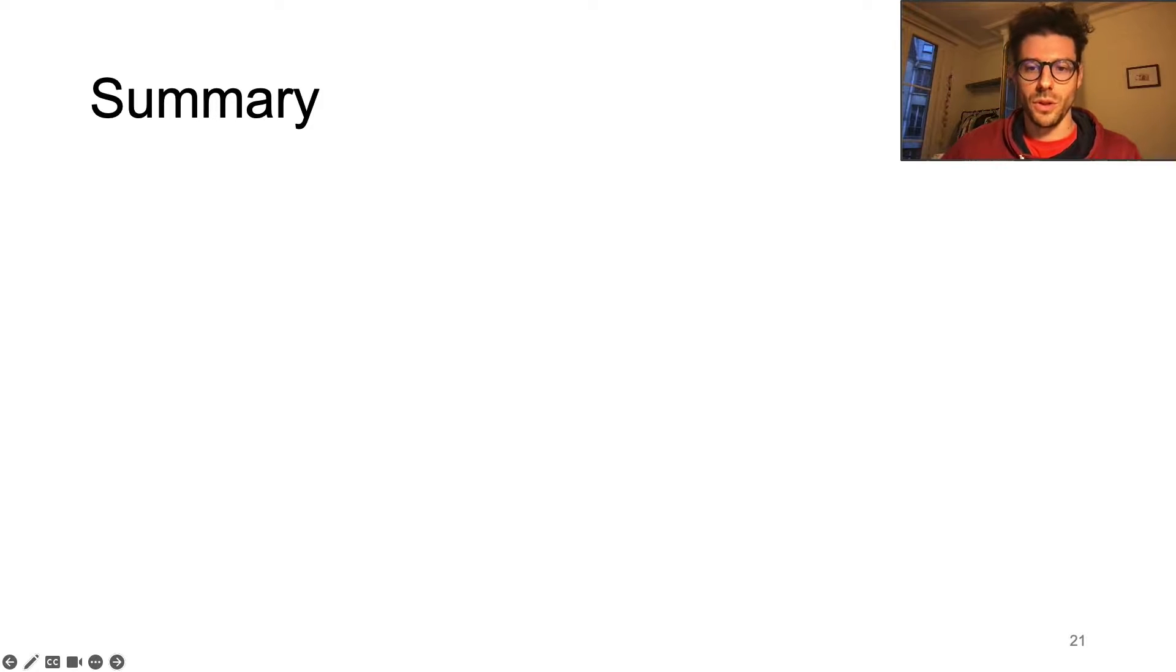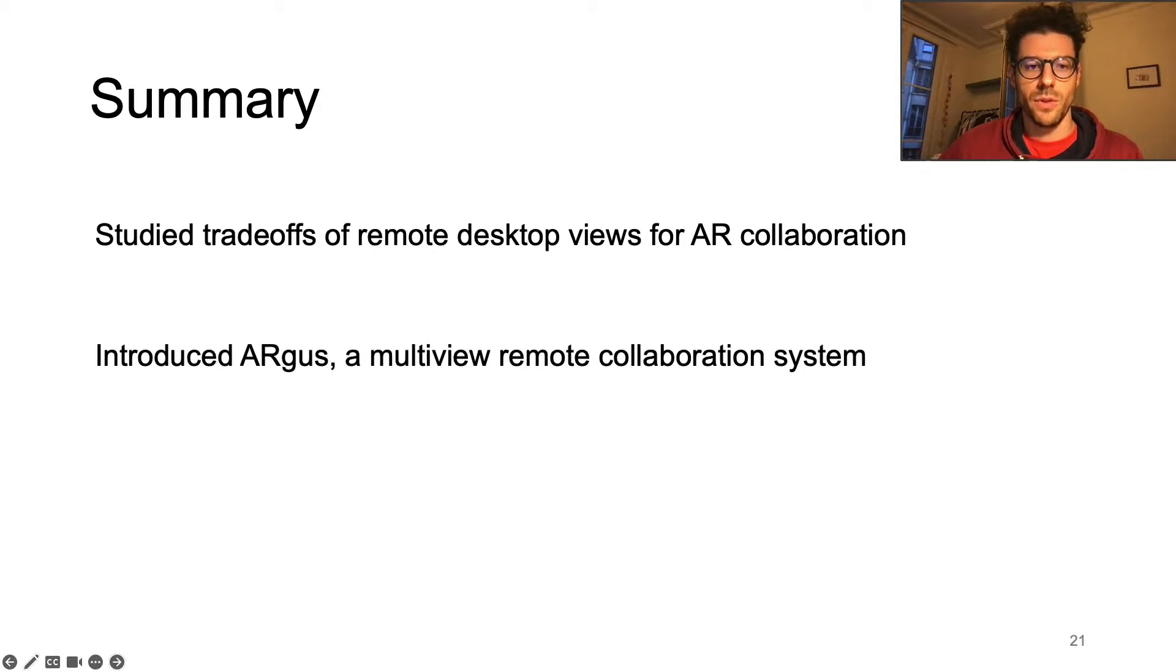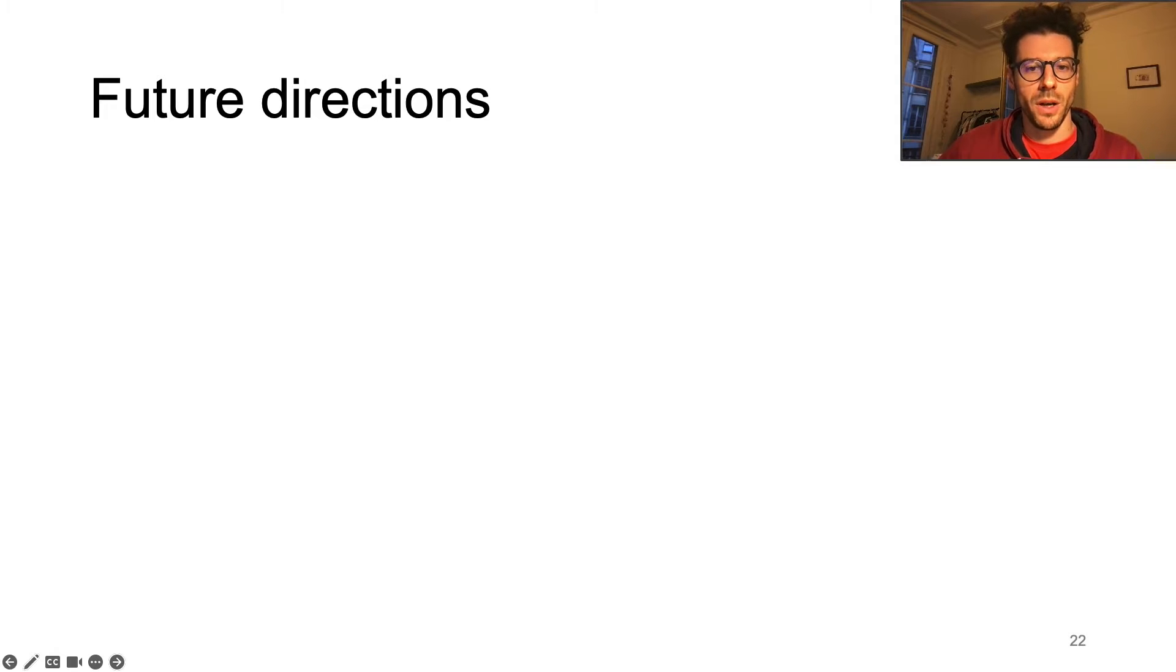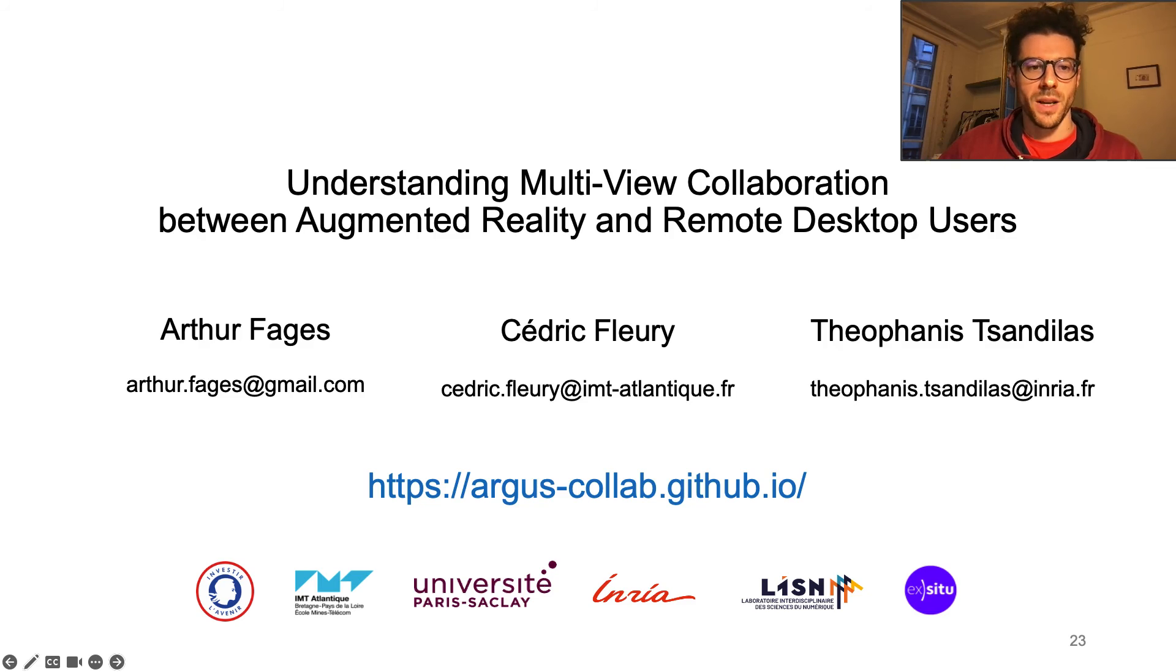In this work, we studied how different views can help a remote desktop user to collaborate with a local user wearing an augmented reality headset. We presented a user study that compared three view representation, a headset view, an external view, and a virtual view, and based on its results, we developed Argus, a multi-view collaboration system that provides tools for effectively switching between views, virtually navigating in the remote augmented reality workspace, pointing and annotating a 3D model. We then ran a second user study to evaluate all 12 remote participants to Argus to provide instructions to a local user wearing an augmented reality headset in a furniture arrangement task. In the future, we intend to extend Argus to multiple remote users and study communication from the perspective of the local augmented reality user. Thank you for your attention, and for more details, please refer to our paper.